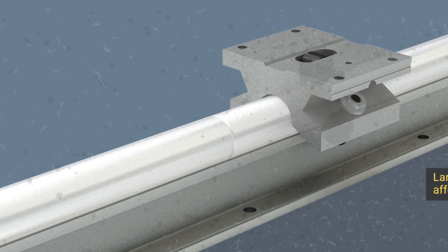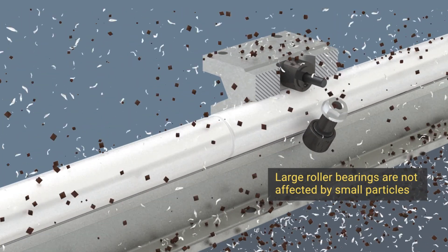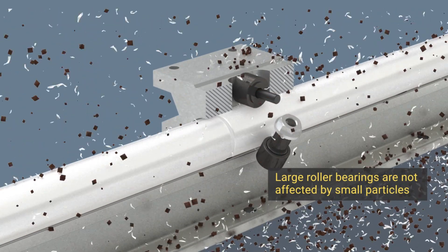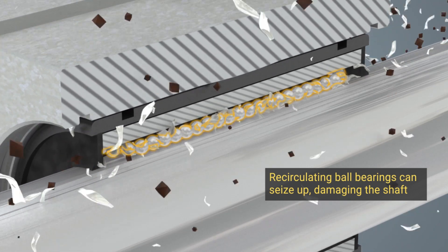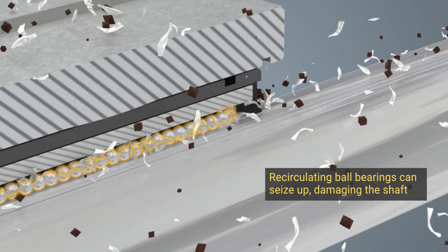In contaminated environments, the roller-bearing will push particles out of the way or roll right over them, where the small diameter balls of a recirculating bearing would seize up and skid, galling, and damaging the shaft.